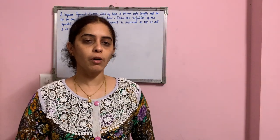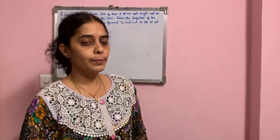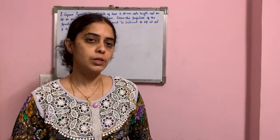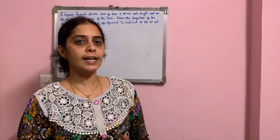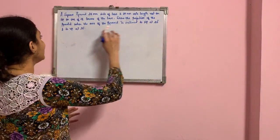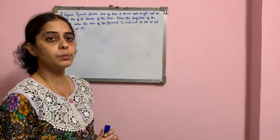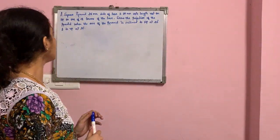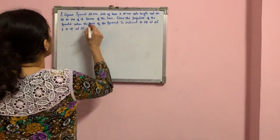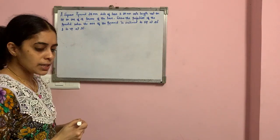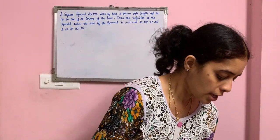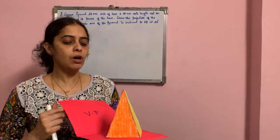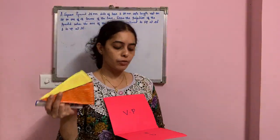Welcome everyone. Today I will be solving one more problem on a square pyramid which is resting on one of its corners. The axis is inclined to HP and VP, so it is a problem on apparent angle beta. The only change from the previous problem is that the given position is resting on one of its corners instead of one of its edges.